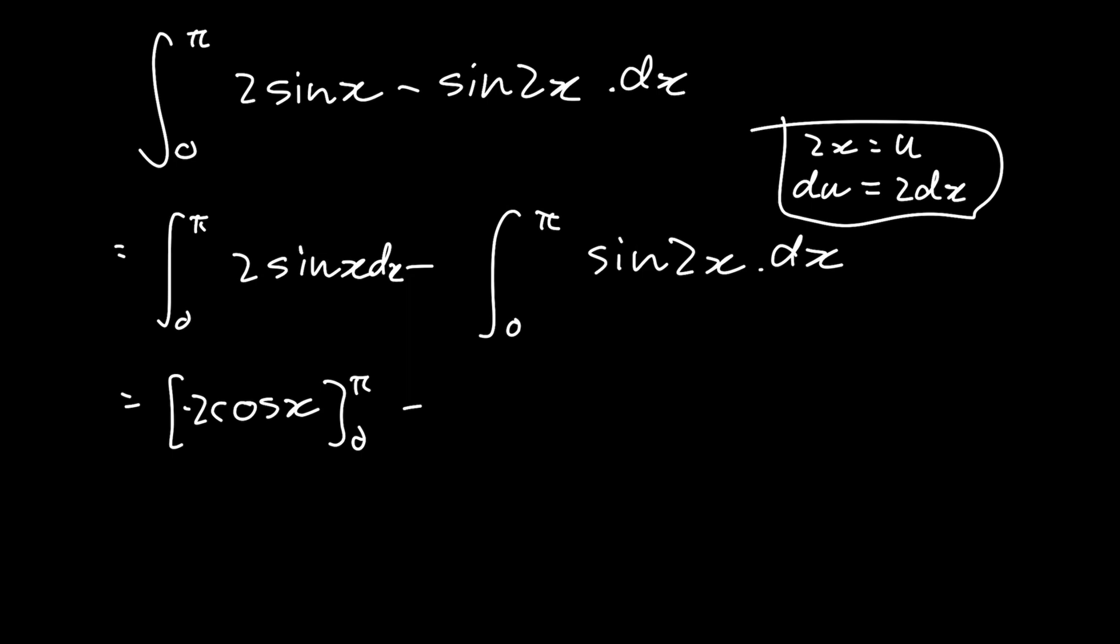When we change our variable, we also need to change our limits of integration. If we integrated x from 0 to π, then we integrate u from... substituting 0, we get 2 × 0 = 0.